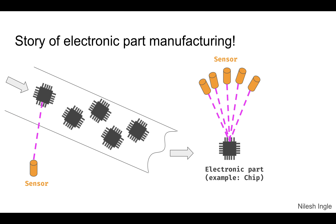This is my intuition of how the electronic part manufacturing process may occur. We have chips coming along a conveyor belt after they are created, and there are sensors that sense different features while they are in transport or being manufactured. There could be sensors after manufacturing as well, measuring different parameters for each manufactured part. All that sensor data is then collected and used to train a machine learning model to decide whether a particular chip should be scrapped or considered a good part.